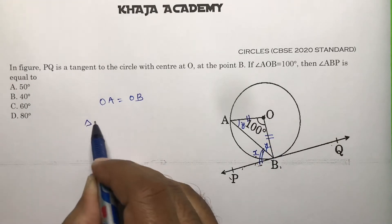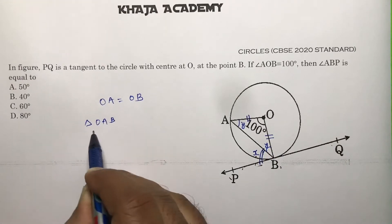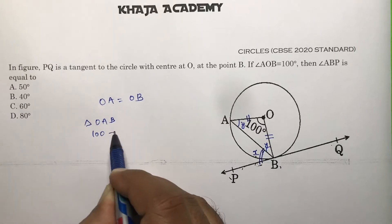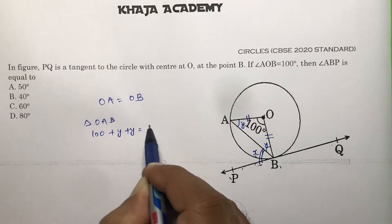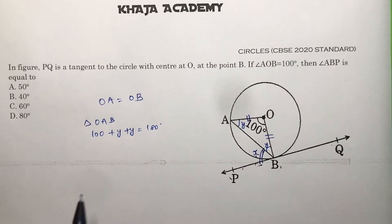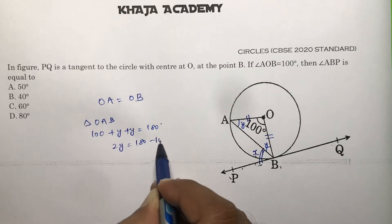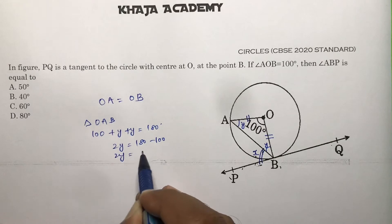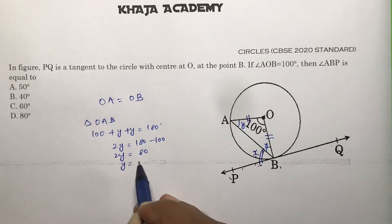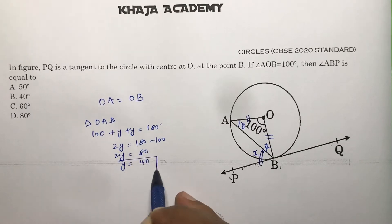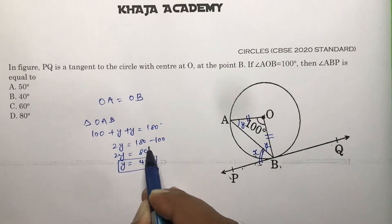In triangle OAB, 100 plus Y plus Y equals 180 degrees by the angle sum property. So 2Y equals 180 minus 100, which is 80. Therefore Y equals 40 degrees.